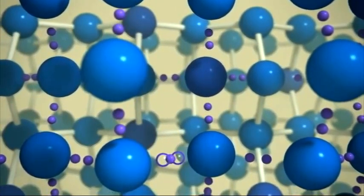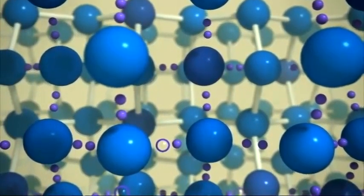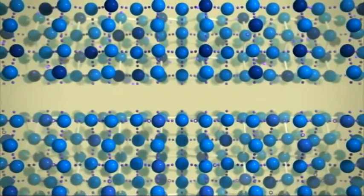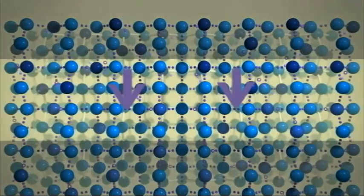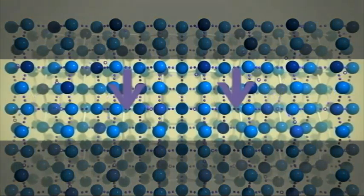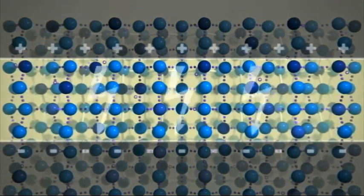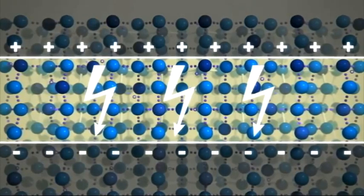In the p-type layer, it's the opposite. The atomic arrangement is missing electrons in certain places. Where one is missing, we say there's a hole. Where there's a hole, a nearby electron can jump in to fill it. In this way, the holes can also move.